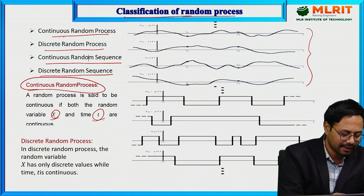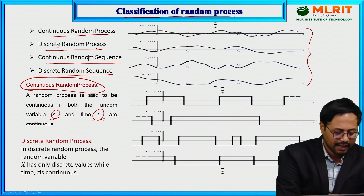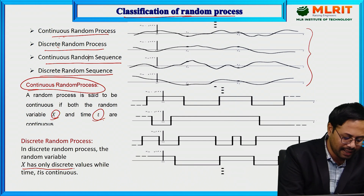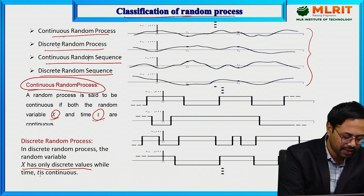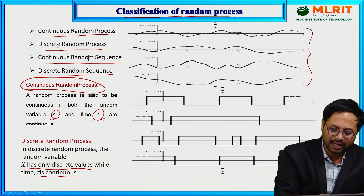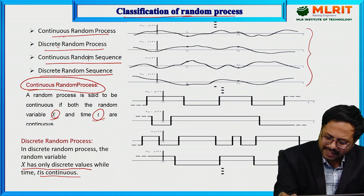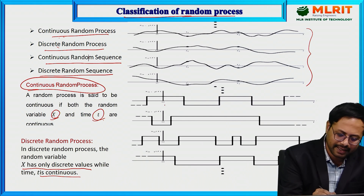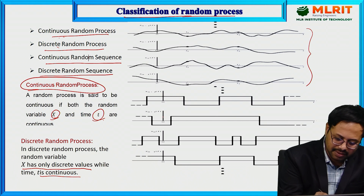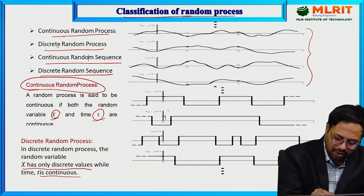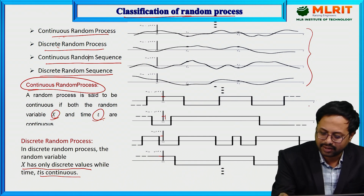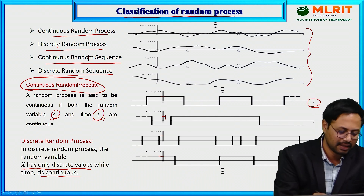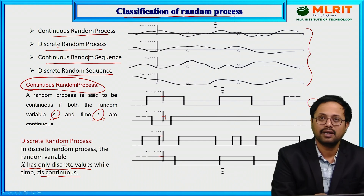In the second case, discrete random process: X has only discrete values, while t is continuous. You can check that the time axis t is continuous, but X takes only discrete values. In all the cases, you are having discrete values for X, but the time axis is continuous. That is the case of discrete random process.